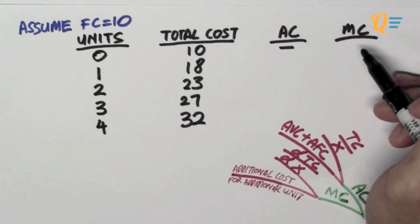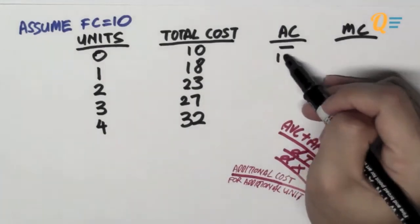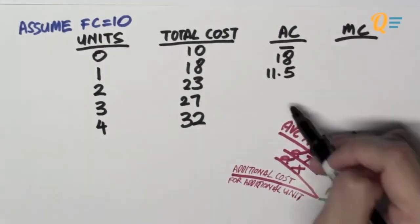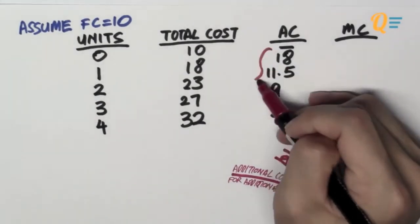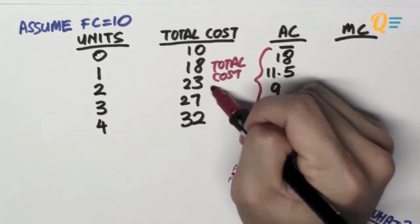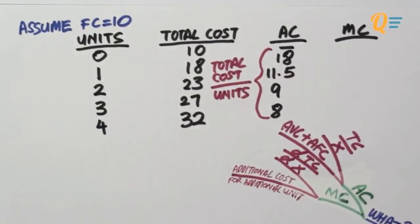So what I'm going to do now is to fill up the rest of the average cost column by taking the total cost divided by the number of units produced. So we've got these following numbers over here. As you can see, it's very straightforward to calculate the average cost. You simply take the total cost divided by the total number of units that's produced.